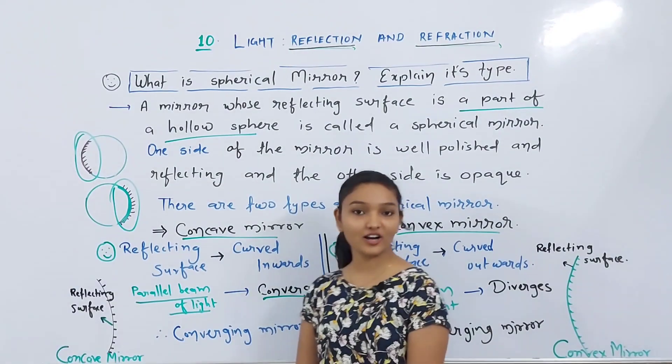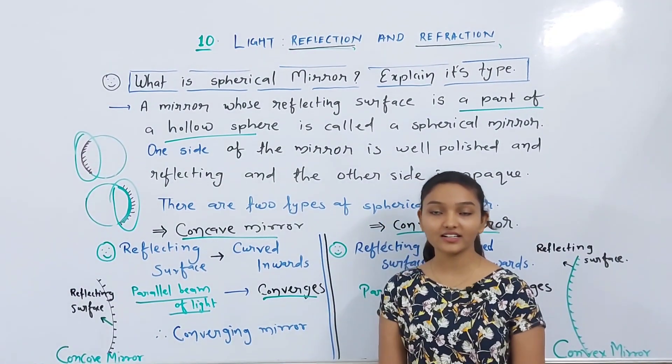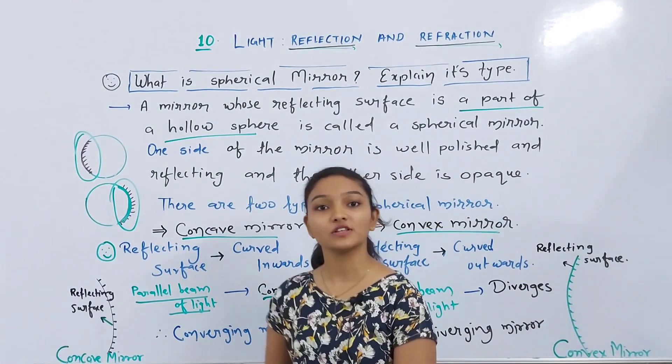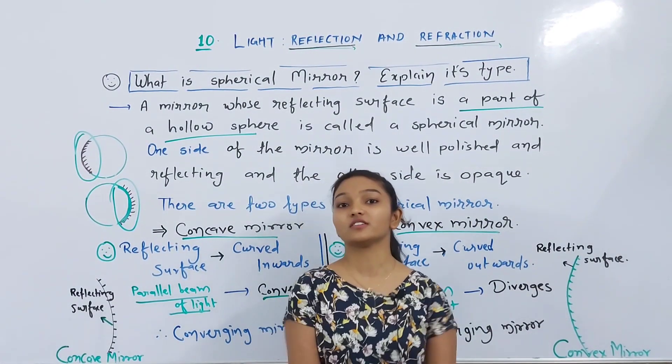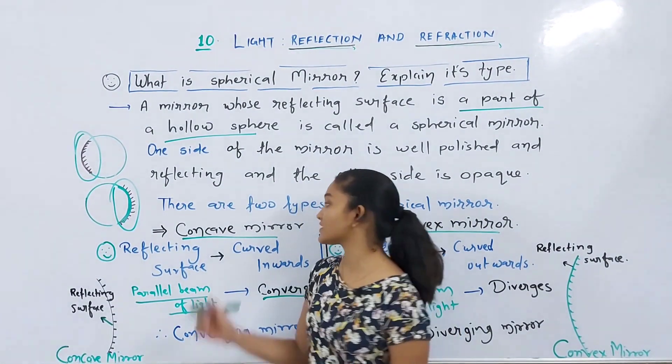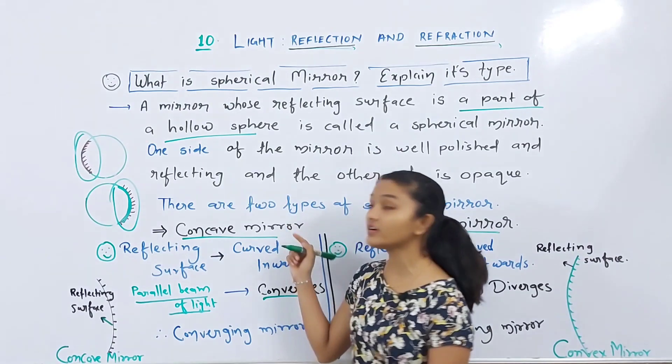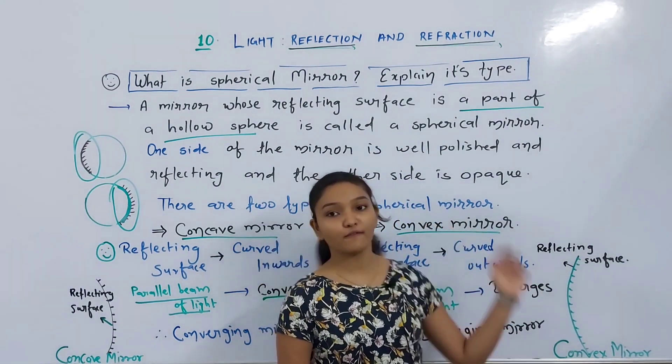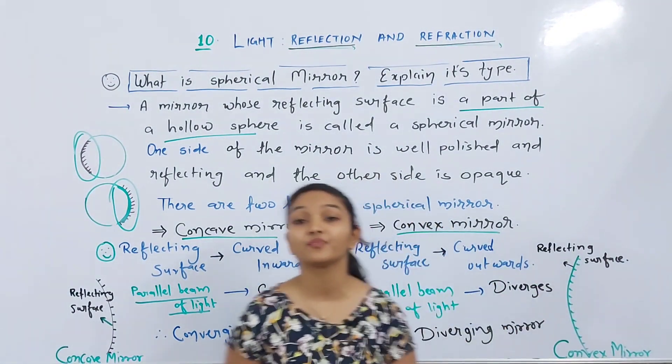There are two types of spherical mirror. The first is a concave mirror, and the second is a convex mirror.